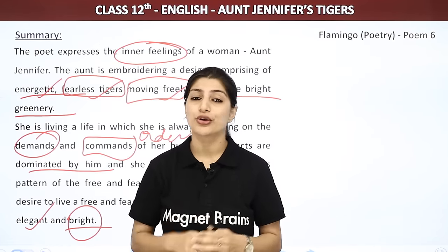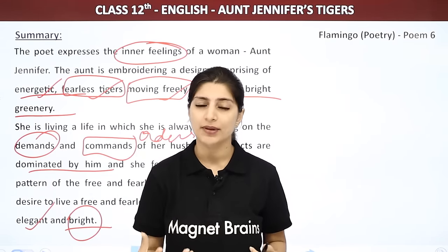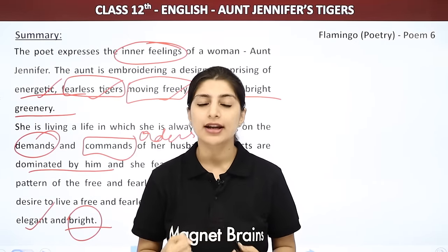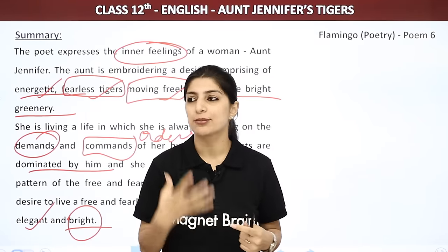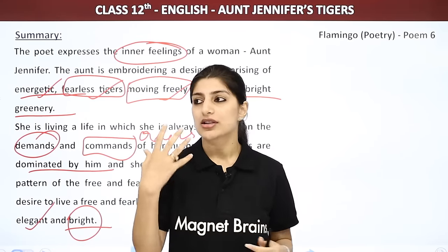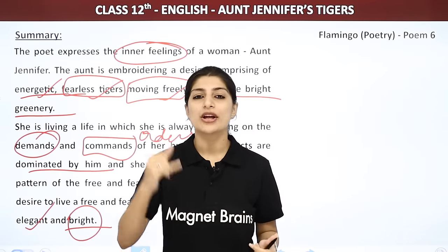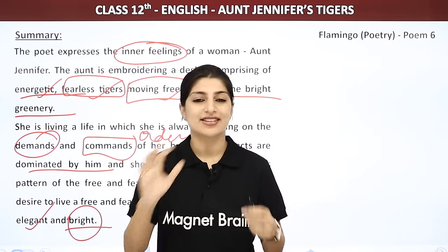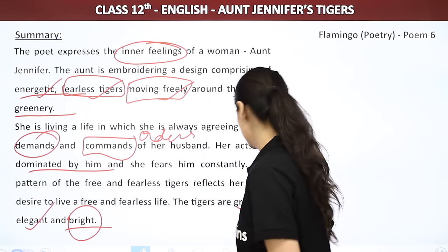Tiger jo hai woh aunt ki bilkul opposite hai kyunki aunt ne poori zindagi itna kaam kiya hai ki woh bilkul bright nahi rahi. Unke face se glow, sab kuch dull ho chuka hai. Unhone apni beauty kill kar di hai. Tiger jo bright aur shining hai, woh aunt ke dull aur exhausted existence ke ekdum opposite hai.